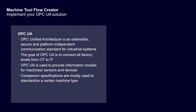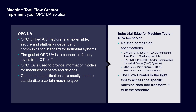Companion specifications are a great way to standardize a certain machine type for an industry. In the machine tool industry there are three different companion specifications: UA for Machine Tools, UA for CNC, and MT Connect. The Industrial Edge for Machine Tools OPC UA server is the perfect tool to access the specific machine data and transform it to fit the standard.